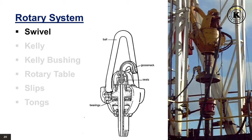The swivel is hung from the hook by the swivel bail and connected to the rotary hose by the gooseneck. Inside the housing just below the gooseneck is the wash pipe, made of the strongest material known to the industry. The wash pipe is stationary and joined to the rotating swivel stem. Special packing to seal this rotating joint is contained in the stuffing box, and the bearings run in an oil bath.